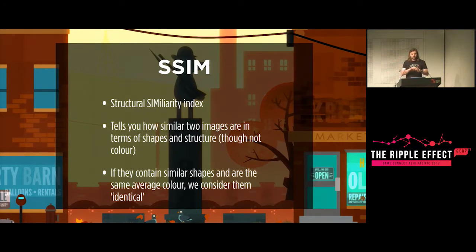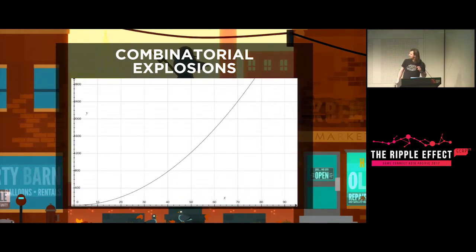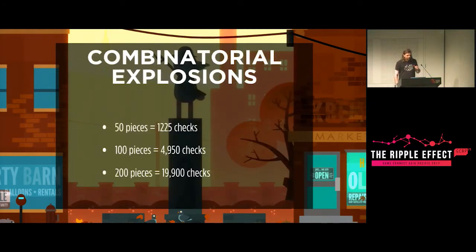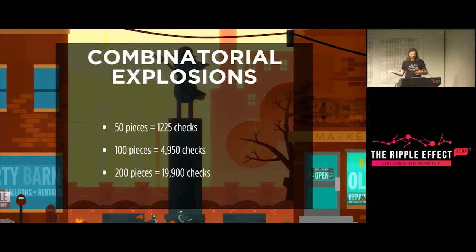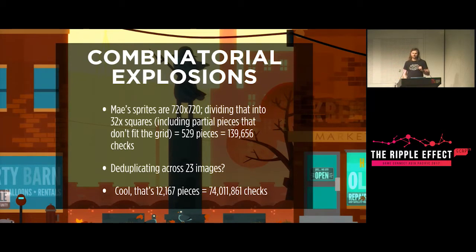Comparing every single piece against every other piece creates a combinatorial explosion — the number of unique pairs grows factorially, which is worse than exponential. For 50 pieces that's 1,200 checks; for 100 pieces it's 5,000; for 200 pieces it's 20,000. May's sprites are 720x720, so divided at 32 pixels that's 529 pieces — roughly 140,000 checks. But in her run loop for just running left, that's 20 images, meaning 74 million checks. It just grows and grows. May herself has roughly 3,000 sprites, and deduplicating all those pieces would take about 37 years at 1,000 checks per second.